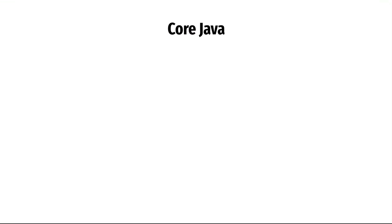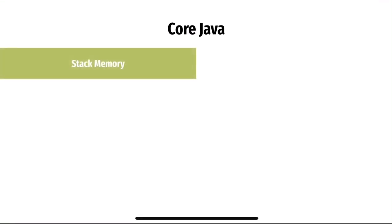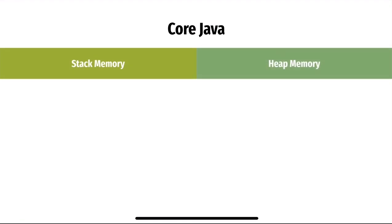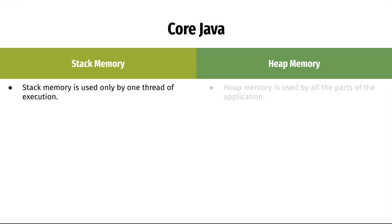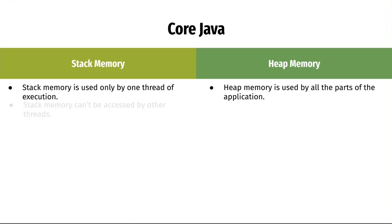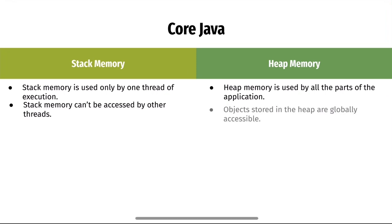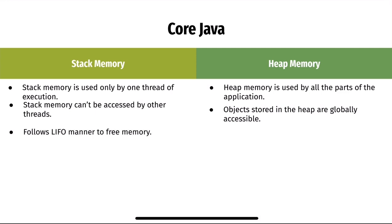In this video we'll go through one of the important interview questions: the difference between stack memory and heap memory. Stack memory is only for one thread of execution, whereas heap memory is used by all parts of the application. Stack memory can't be accessed by other threads, but once an object is created in the heap, it can be globally accessed.